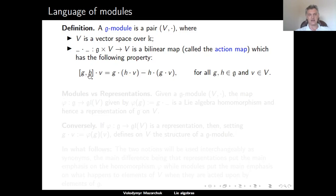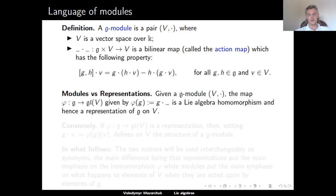This property says that the bracket of two elements g and h in g acts on an element v in V in the same way as described by the right-hand side of the equality. The right-hand side says it is a difference: we first act on v by h and then by g, and then subtract the element obtained by acting on v first by g and then by h. Effectively, the bracket of elements g, h should act as the commutator of the linear maps described by g and h, which is exactly the definition of a representation.